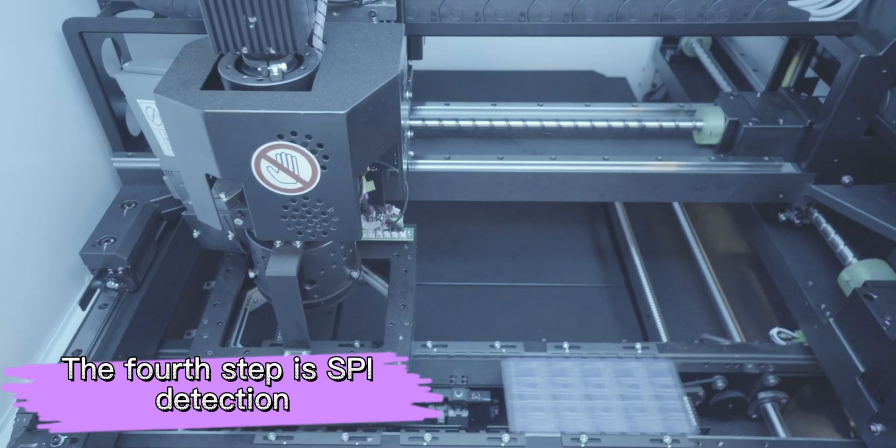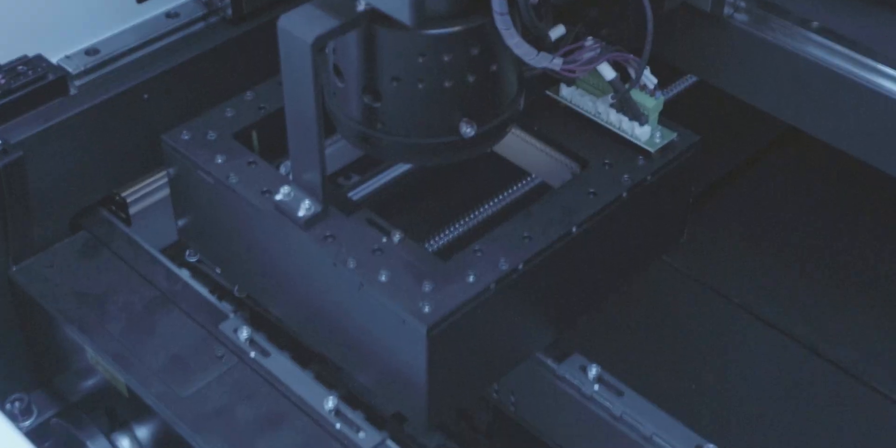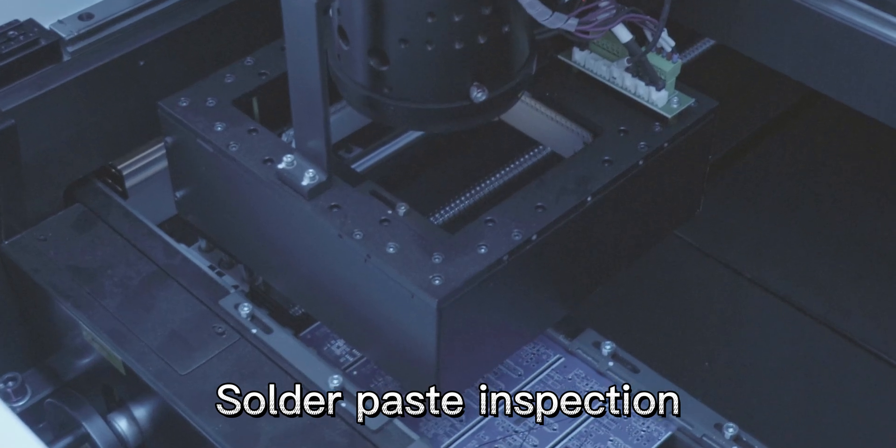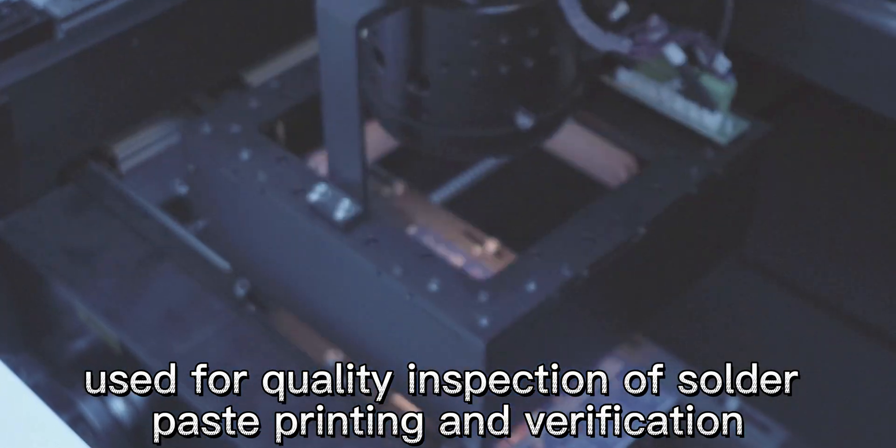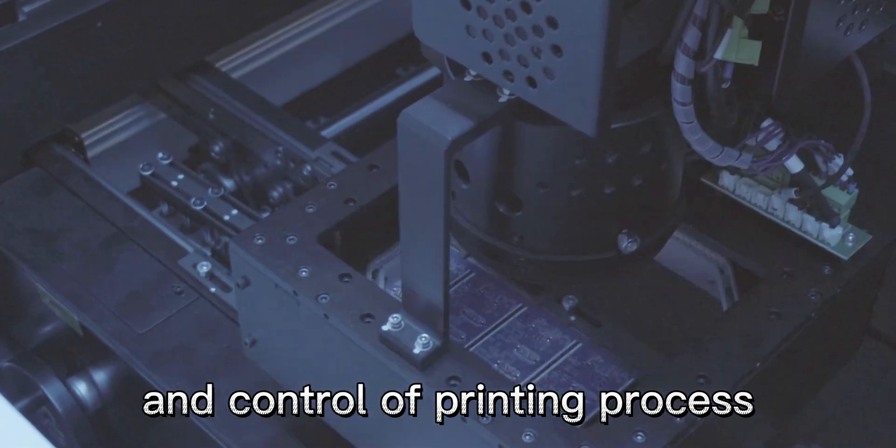The fourth step is SPI detection—solder paste inspection, used for quality inspection of solder paste printing and verification, and the control of printing process.